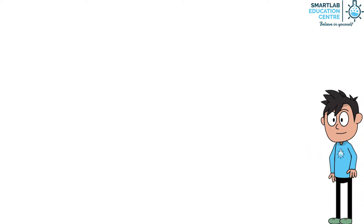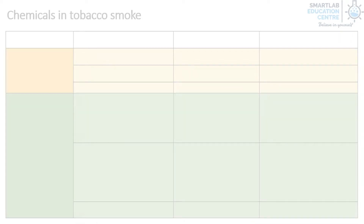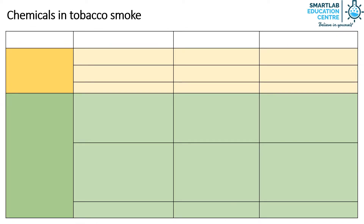Welcome back everyone. Today we learn about chemicals in tobacco smoke. In this video, we will learn about the various chemicals found in tobacco smoke, its properties, its effects on the body, and the various illnesses one suffers as a consequence of smoking.